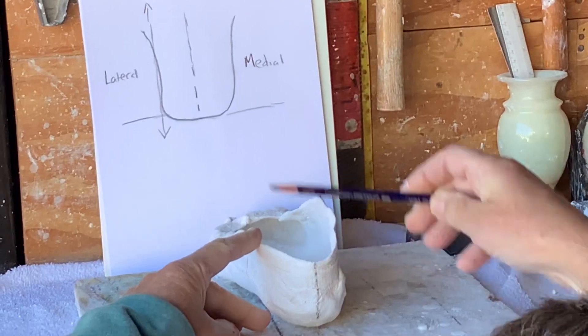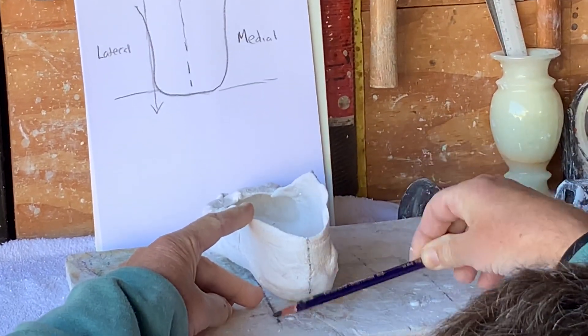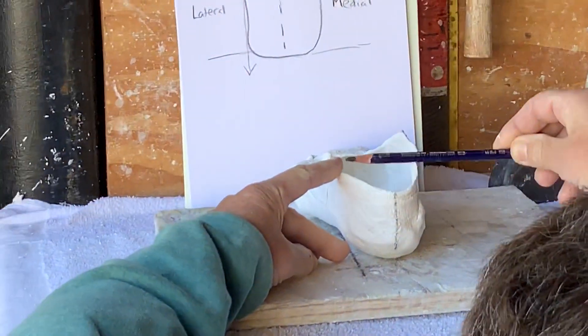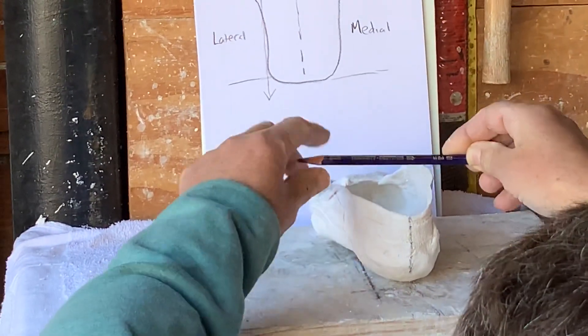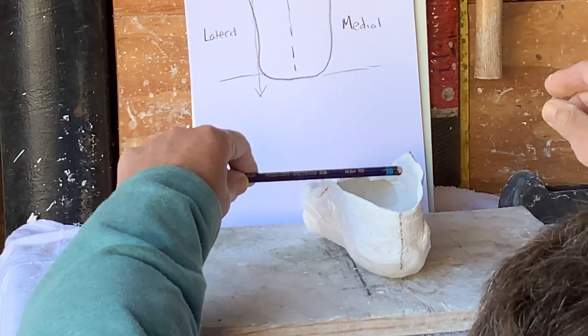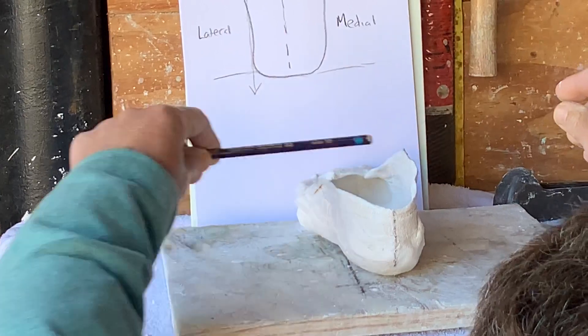That is going to be our new reference point to the ground, so we know when we pour the cast, the cast is going to be, or the top of the cast is going to be perpendicular to that and going to be a representation of the ground.